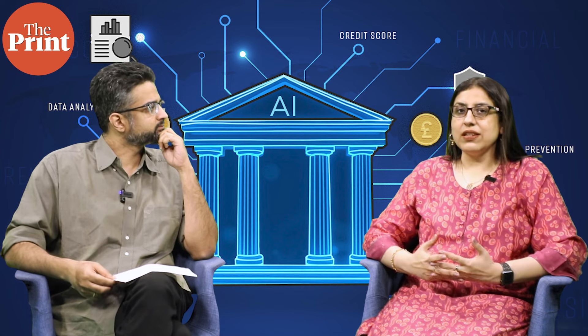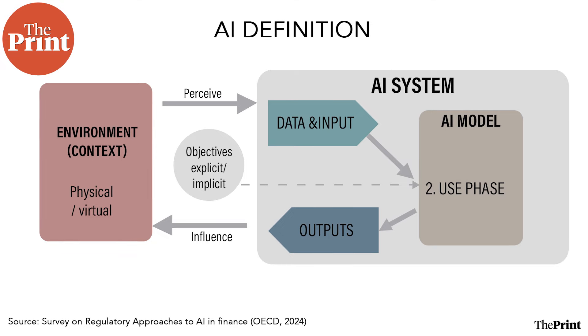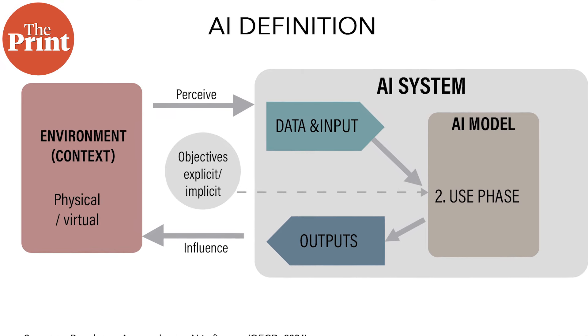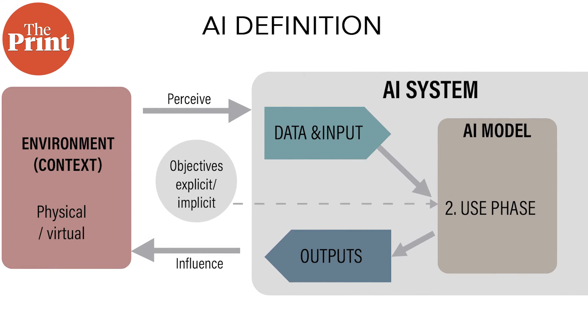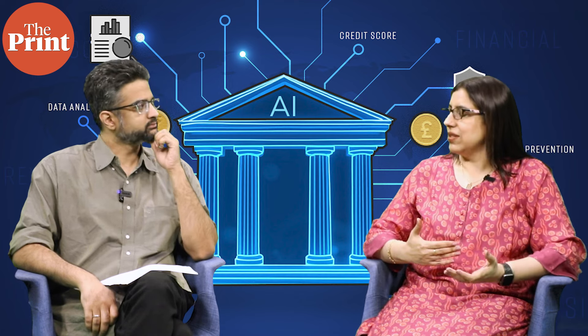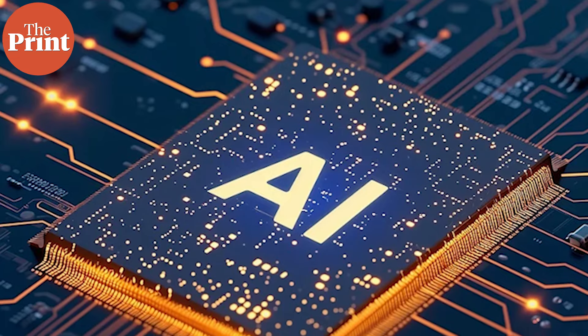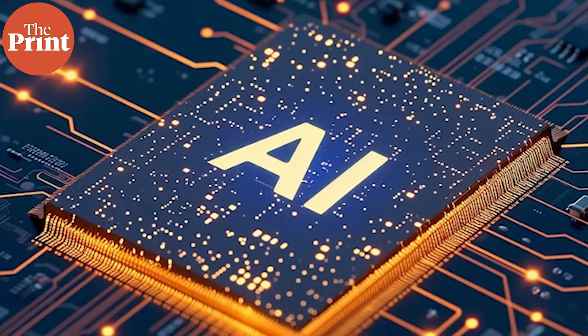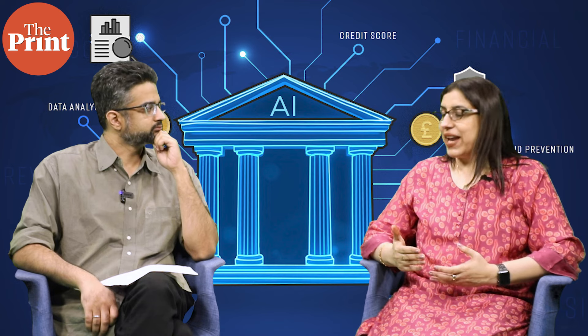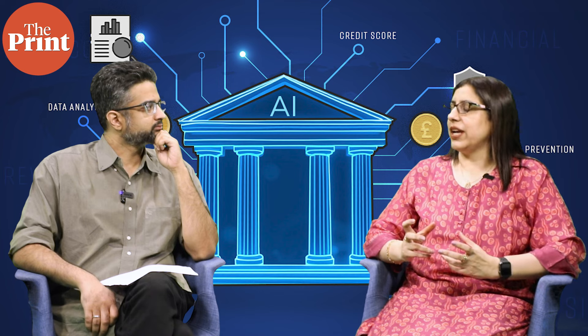There are various definitions of AI, and because it's an evolving field, there is a lot of conversation around what is the scope of artificial intelligence and what is the form of it. Generally, what is accepted is a machine-based system that takes certain inputs, processes them, and generates output. That output can be in the form of a prediction, a recommendation, or new content — such as video content. There could be various forms of output based on the objective provided.